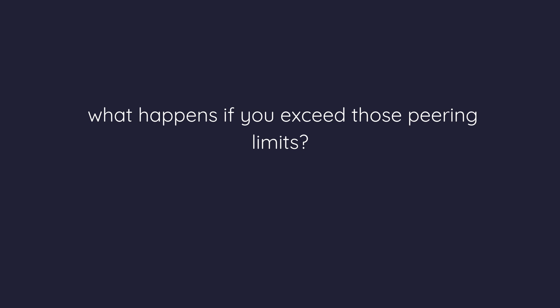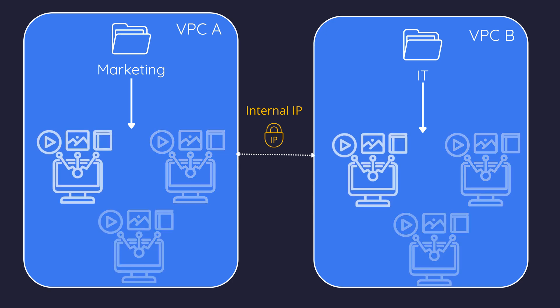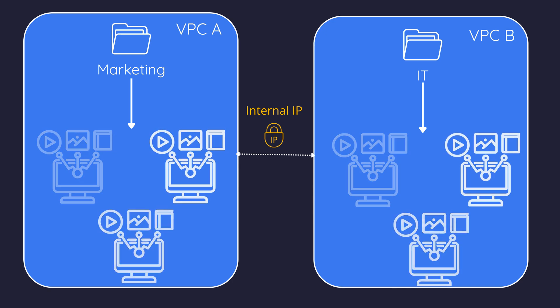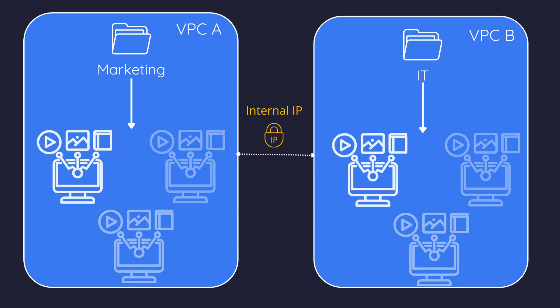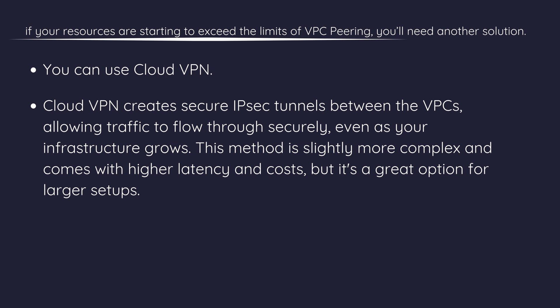So what happens if you exceed those peering limits? Let's say your marketing team and IT team are growing fast and you now have thousands of VMs running in both VPCs. If your resources are starting to exceed the limits of VPC peering, you'll need another solution. In this case, you can use Cloud VPN. Cloud VPN creates secure IPsec tunnels between the VPCs, allowing traffic to flow through securely even as your infrastructure grows. This method is slightly more complex and comes with higher latency and costs, but it's a great option for larger setups.